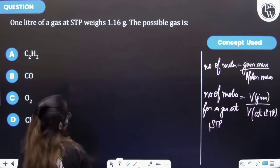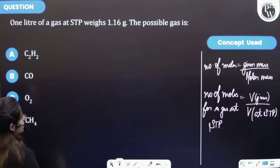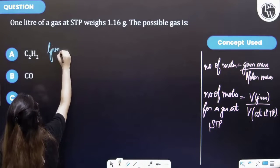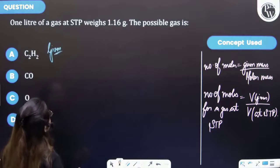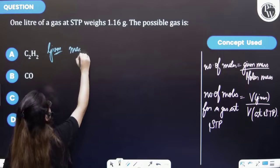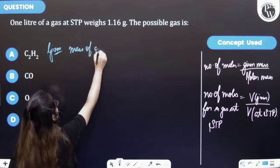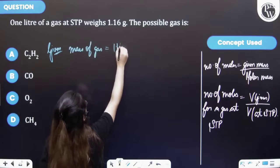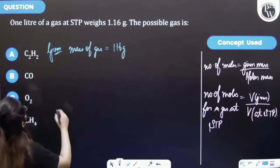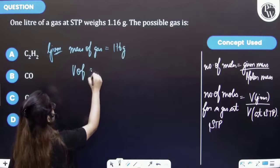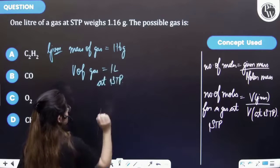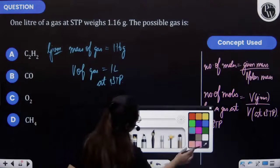So in this question, firstly let's write the given things to us. Given that there is a gas which weighs 1.16 grams, so the mass of gas is 1.16 grams. Also it is given to us that one liter, volume of gas is one liter at STP.